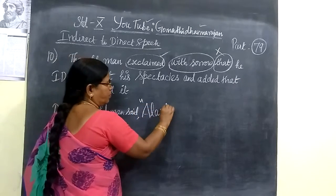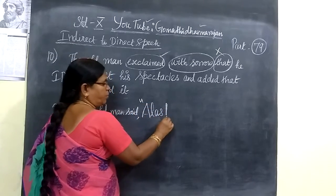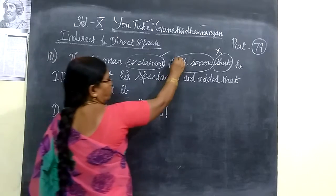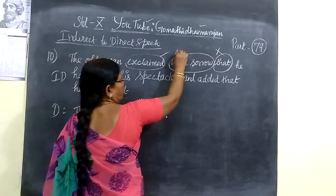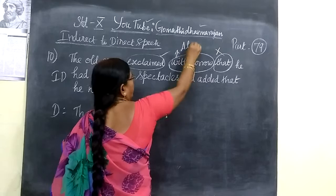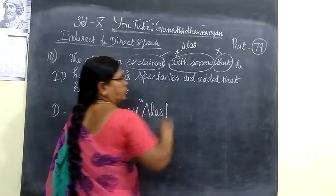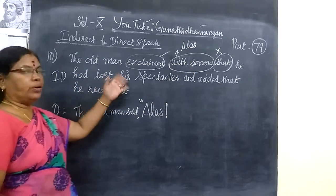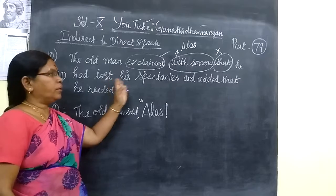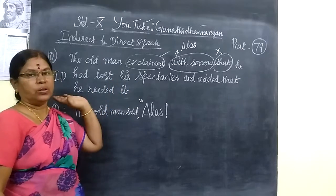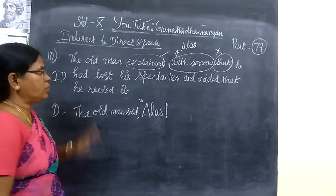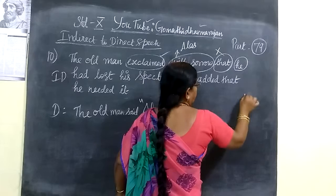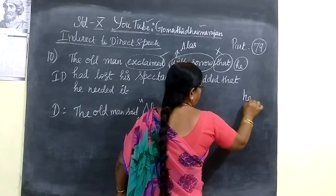We write 'Alas' with an exclamatory mark at the bottom. With sorrow, you write 'Alas'. Then you are going to change the pronoun. 'He' is changed into 'I' — because it refers to the speaker.